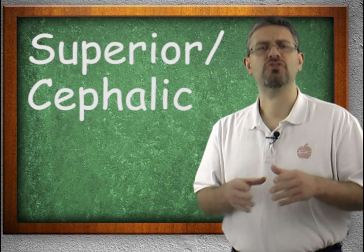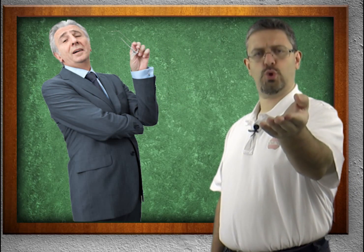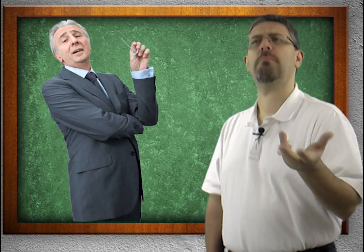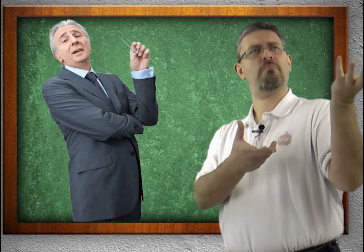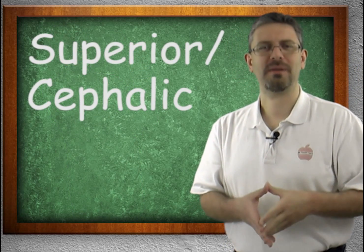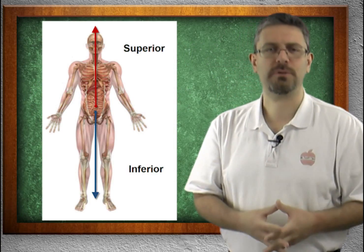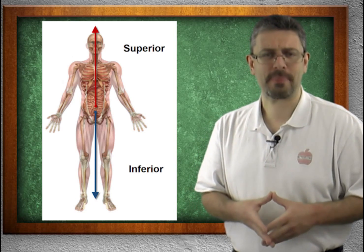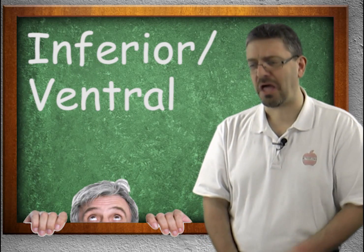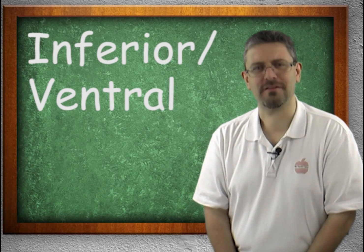Let's begin talking about top and bottom. If I said that I was superior to you, what does that mean besides being a real big jerk? It means that I think I am above, over. Well, in the human body, superior means over, above, going towards the top. If I said I felt inferior, it means that I feel under, below. In the world of human anatomy, inferior means towards the feet, going downwards.